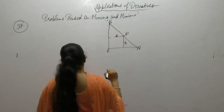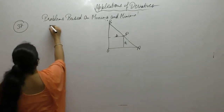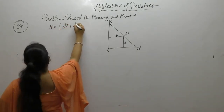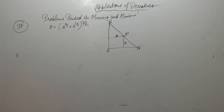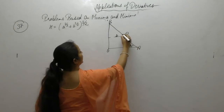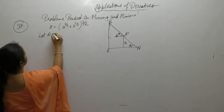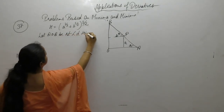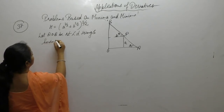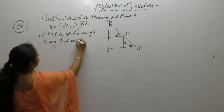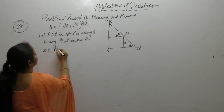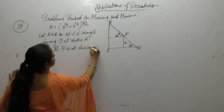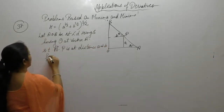A and B are distances from the sides of a triangle. We need to show the minimum length of hypotenuse is (a^(2/3) + b^(2/3))^(3/2). Let AOB be a right-angled triangle having angle theta at vertex A, such that point P is at distance A and B from the sides of the triangle.